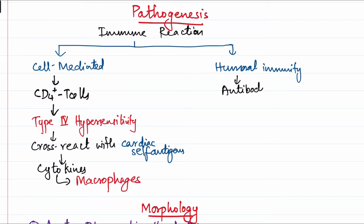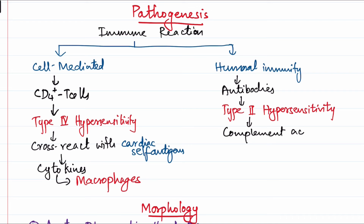Humoral immunity is mediated by antibodies. These antibodies elicit a Type 2 hypersensitivity reaction against our cardiac antigens. As a result, there is complement activation, and because of complement activation, macrophages, neutrophils, and other cells are recruited. So the pathogenesis involves a combination of Type 4 and Type 2 hypersensitivity reactions.